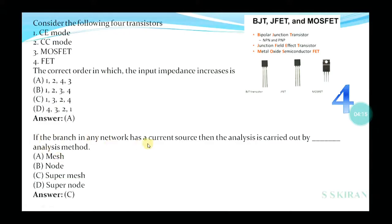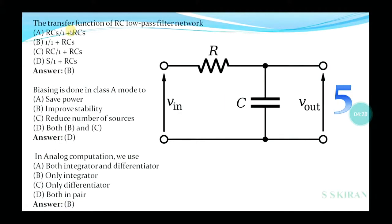If the branch in any network has a current source, then the analysis is carried out by which analysis method: mesh, node, super mesh, or super node? Option is super mesh.